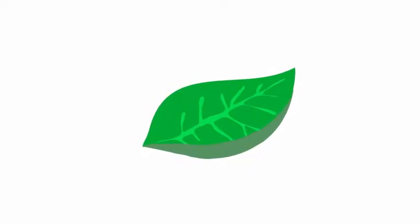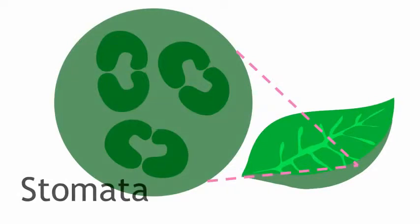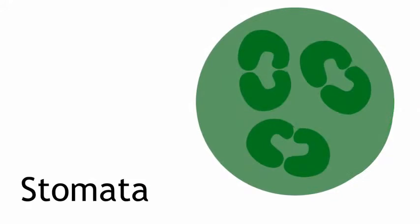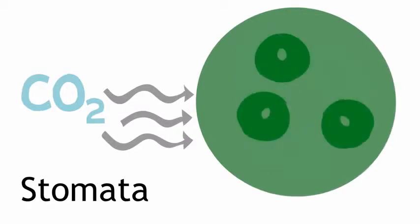What else do we need for photosynthesis? Carbon dioxide. That's where the bottom of the leaf comes in. It's got these little pores called stomata, which open up so carbon dioxide can diffuse into the leaf. They're controlled by sausage-shaped guard cells, which open up to let carbon dioxide in, but they can also close the stomata to prevent other things like water from escaping.